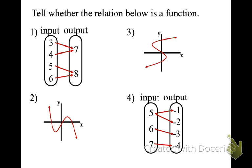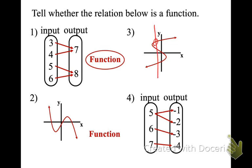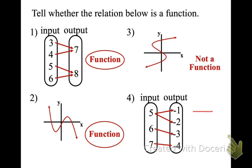Let's check our work. Number two — as I run my vertical line through, it passes the vertical line test, so it is a function. There's no vertical part of it. Number three — as I run my vertical line through, you can see it crosses here, here, and here, so it is not a function. Number four — the table represents ordered pairs (5, -1) and (5, -2), (6, -3), (7, -4). The x's repeat, so it's not a function.